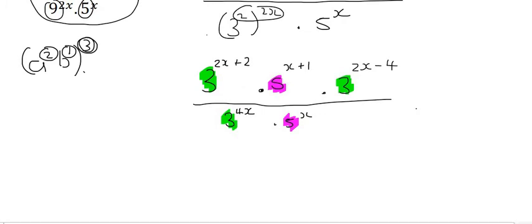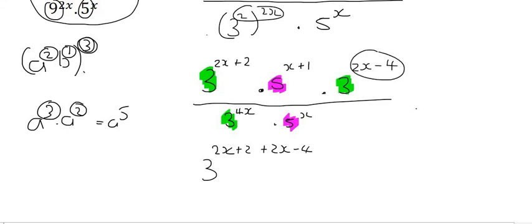So we can combine all the 3s together and we can combine all the 5s together. So at the top, let's combine those 3s. So what does the exponent rule say? If you had a 3 times by a to the power of 2, what would you do with these? You would add them. And so we do the same over here. And so that's going to be 2x plus 2 plus 2x minus 4. So I've just added these together.